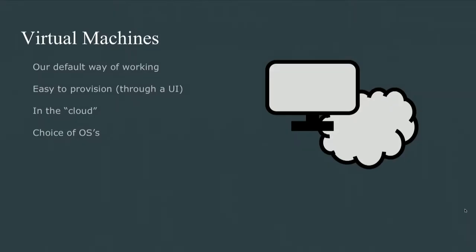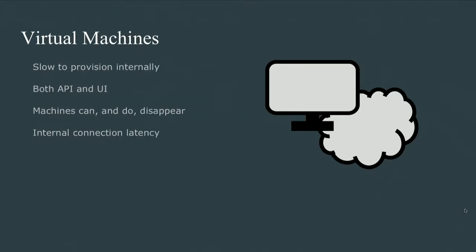Before getting into Docker, I'd like to step back and talk about virtual machines. VMs are our typical way of working — they're our default units of compute. They're easy to work with and easy to provision via a cloud UI with a choice of operating systems. But they're a bit slow to provision internally due to the overhead of spinning up a machine and getting the OS installed. The machines can and do disappear — they're not persistent, just units of compute, and when things go down you have to take time to spin them back up again.